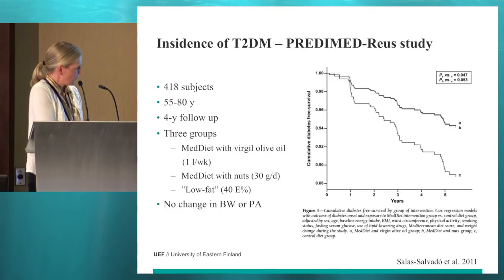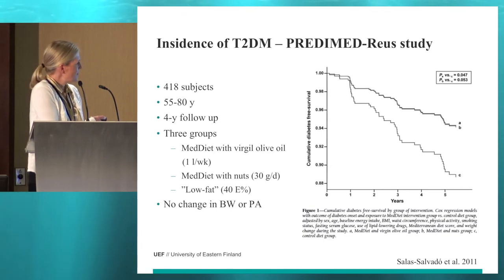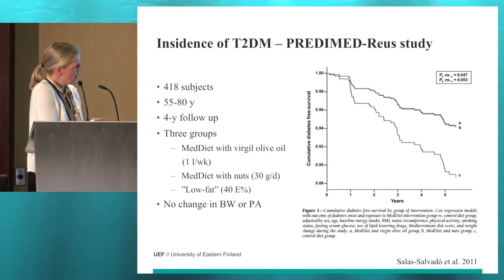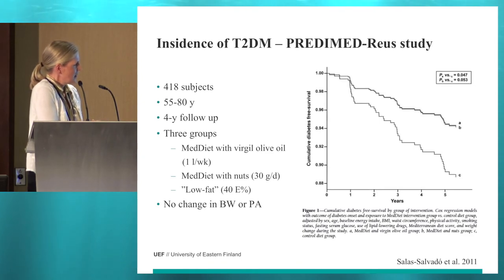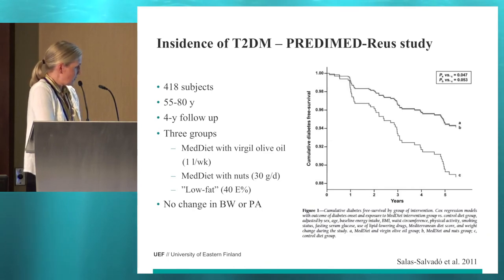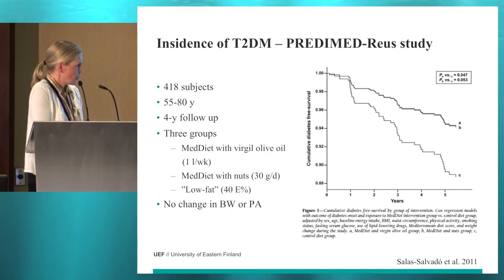This figure you saw earlier today — the PREDIMED study with 418 subjects and 4-year follow-up with three groups. Subjects in the Mediterranean diet group had much less type 2 diabetes than in the group that was called low fat in the study, but it had 40% of energy intake as fat, whereas the other groups had 41%, so maybe low fat is not an appropriate term to describe this diet.